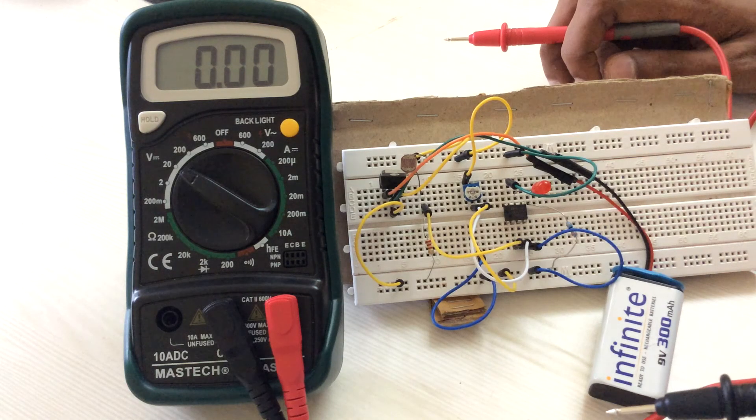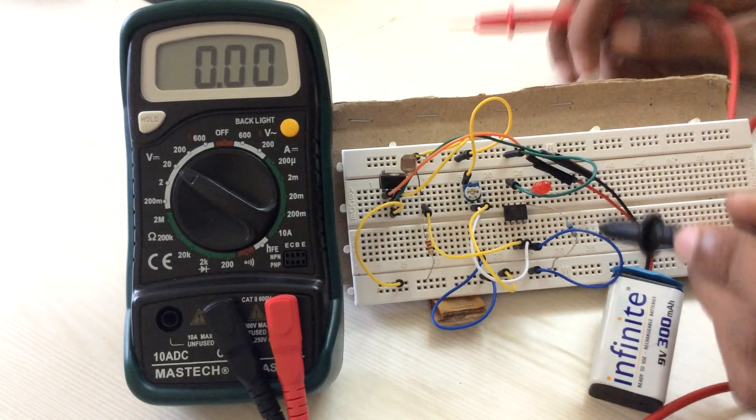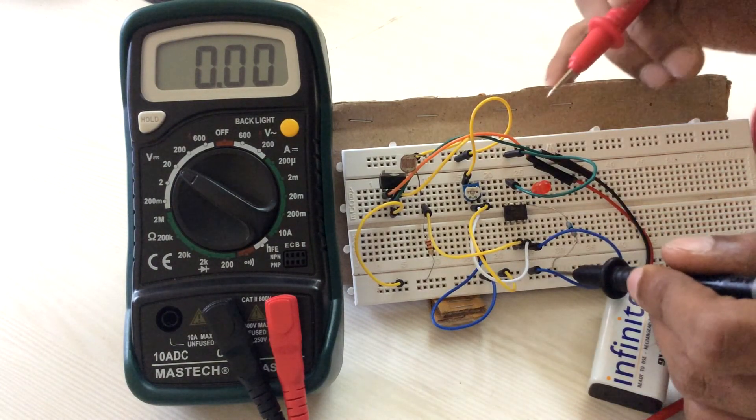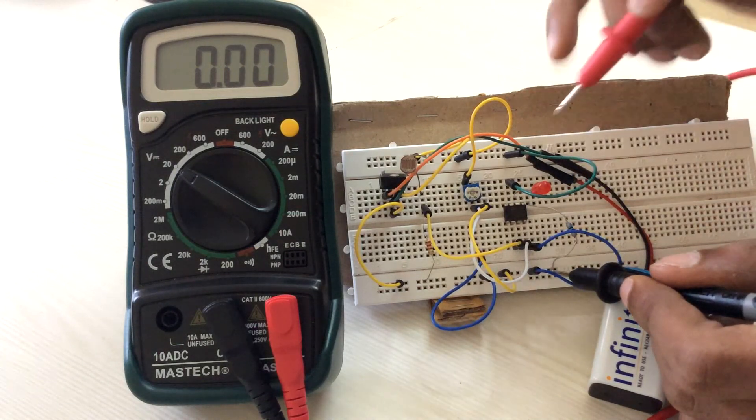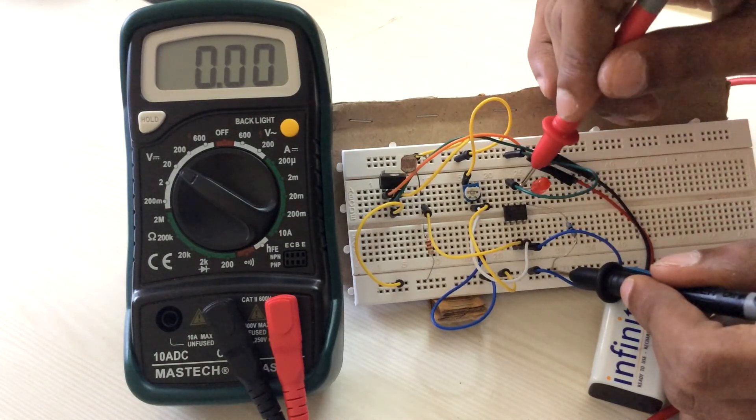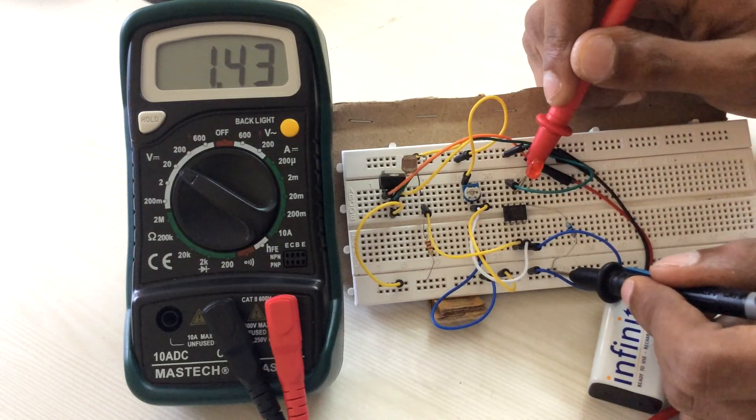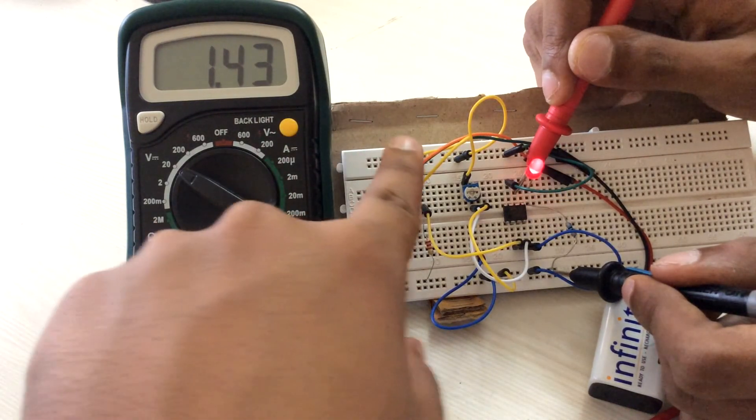Now, you can use the DMM to check the voltage at any pin of this IC. Just make sure that you connect the black cable to the ground and keep the red cable at any one pin of the IC that you want to test. Now, let us connect the red cable to the sixth pin of the IC and see how the output varies.